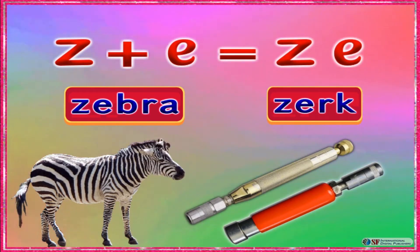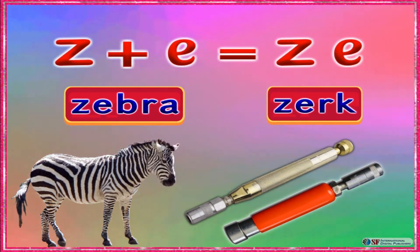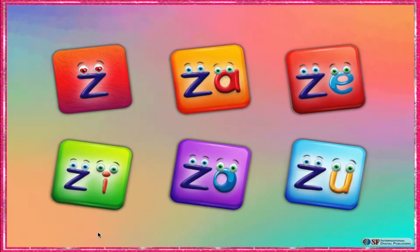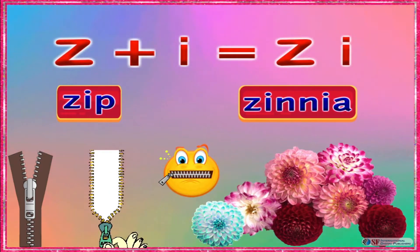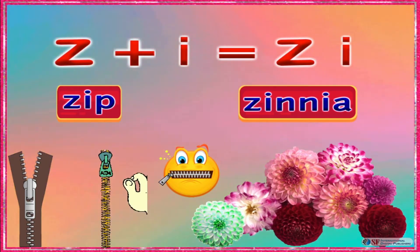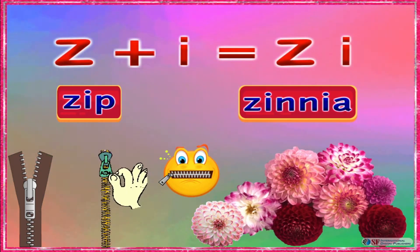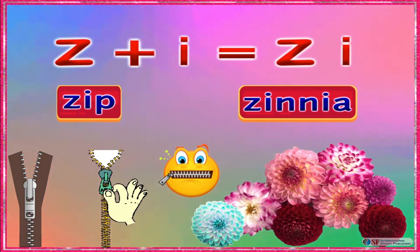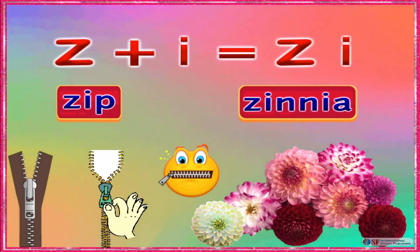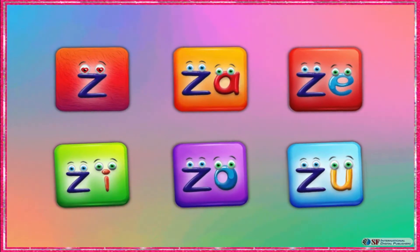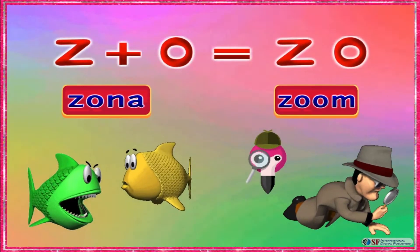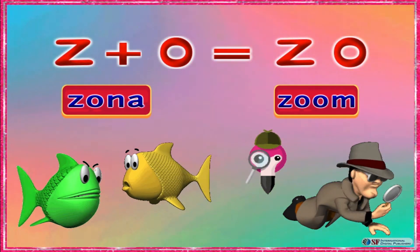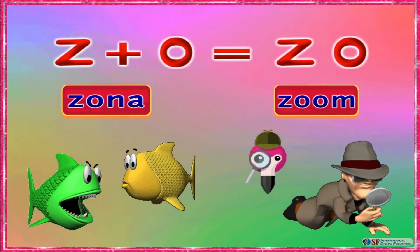Fantastic Sarah, like Zebra and Zerk. Zerk and E makes ZE. Well done Sarah, like Zip and Xenia. Zerk and E makes ZE.